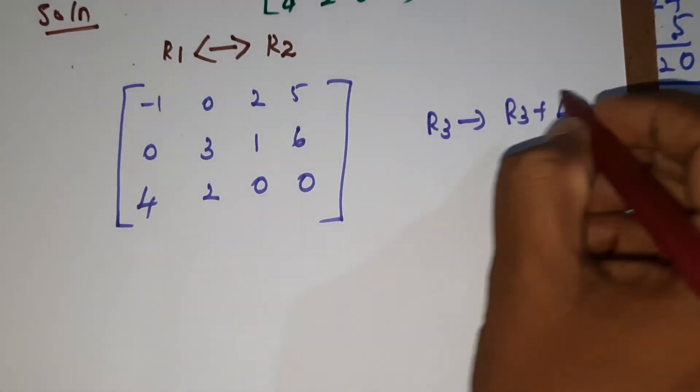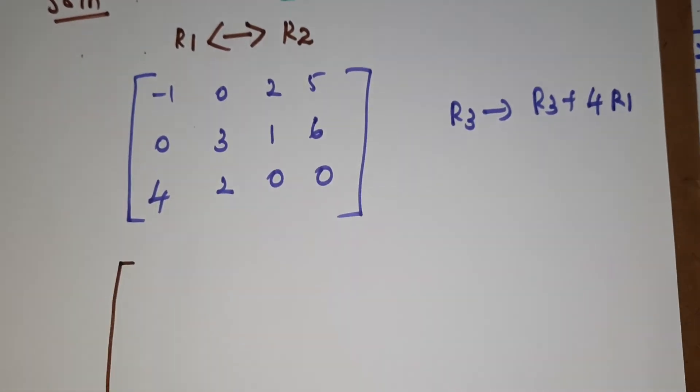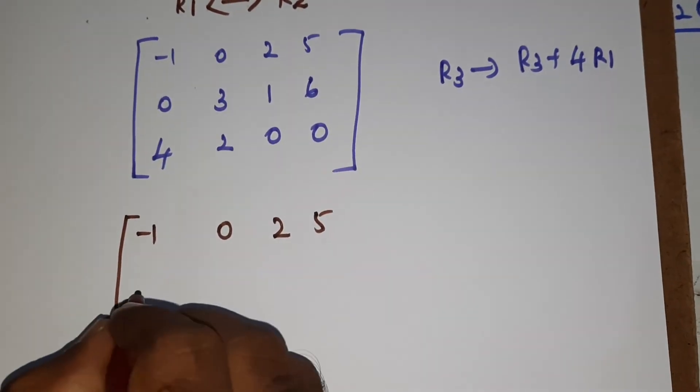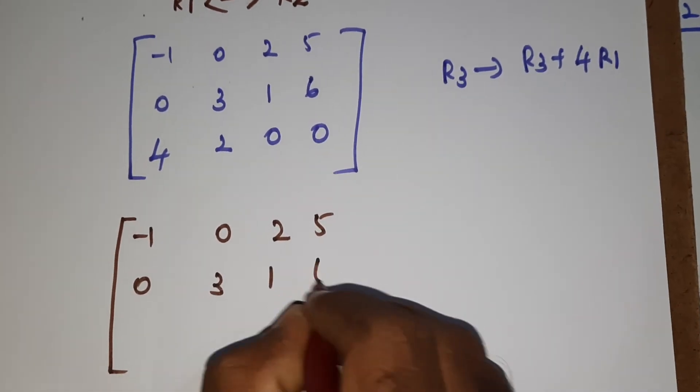R1, R2 as it is, what is R1, R2? Minus 1, 0, 2, 5. Then 0, 3, 1, 6.